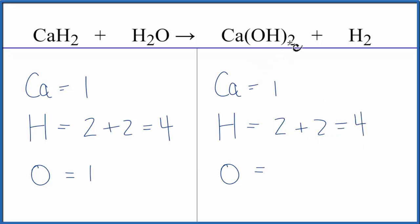For the oxygen, again, this two applies to everything in parentheses, so we have the two times the one. That gives us two oxygen atoms. So the equation's almost balanced. To balance it, let's fix the oxygens by putting a two in front of the H2O.